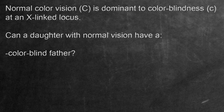The question is: can a daughter with normal vision have a colorblind father? To answer this problem, let's figure out what the daughter's genotype needs to be in order to have normal vision. We know that females have two X chromosomes, and since this trait is at an X-linked locus, we'll be using X chromosomes to solve this problem.